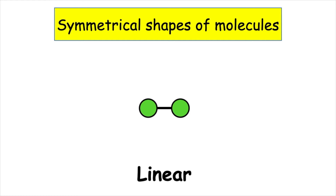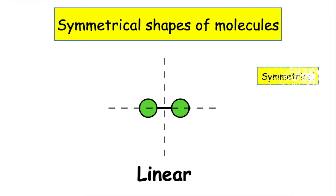Let's take shape number one, which is linear. Here we can see that this is a diatomic element — we have two green circles, which means we have the same type of element and two atoms joined together. We can look along the x-axis and we can see a line of symmetry, and along the y-axis we've also got a line of symmetry, so therefore this would be a symmetrical shape.